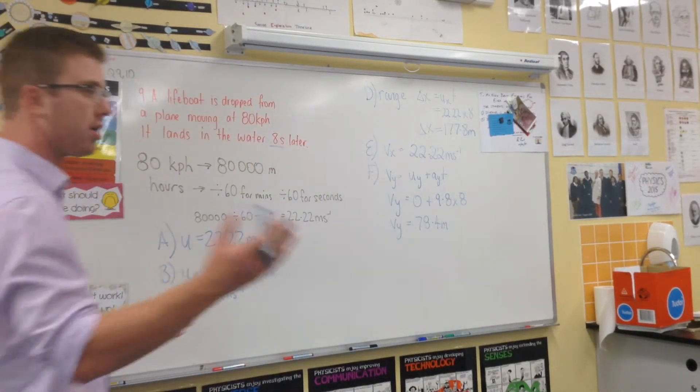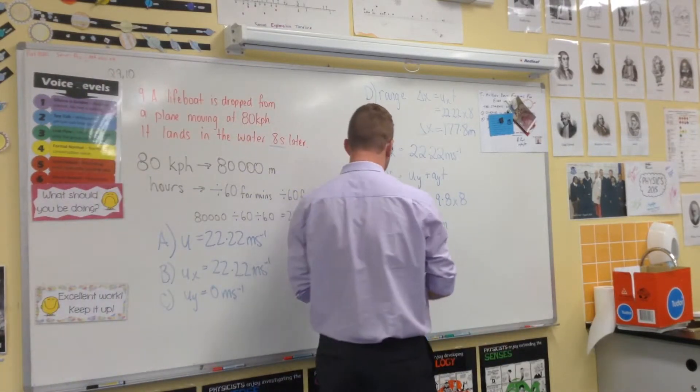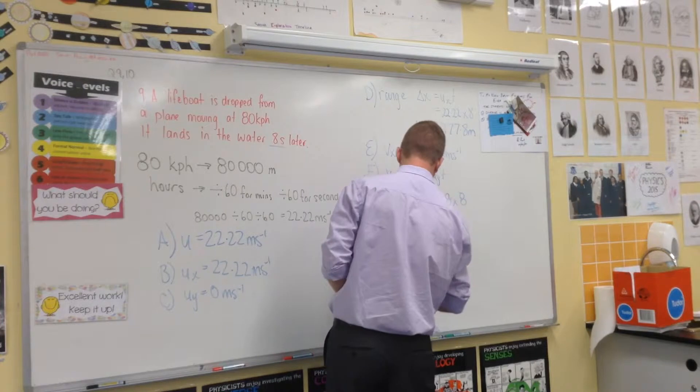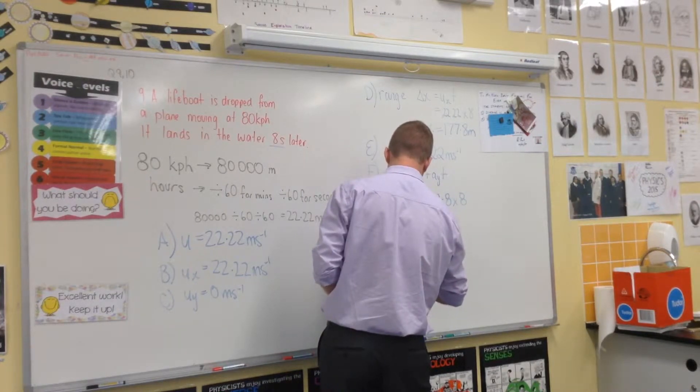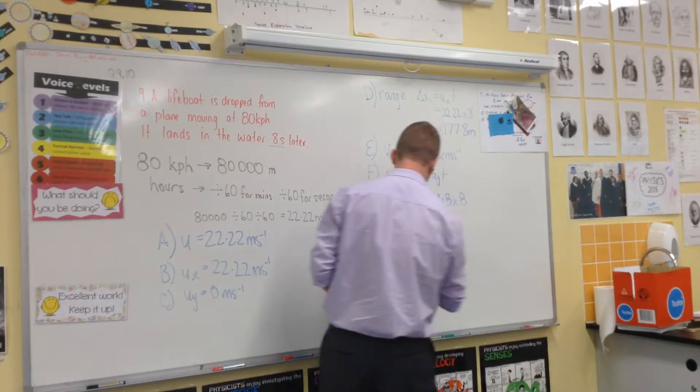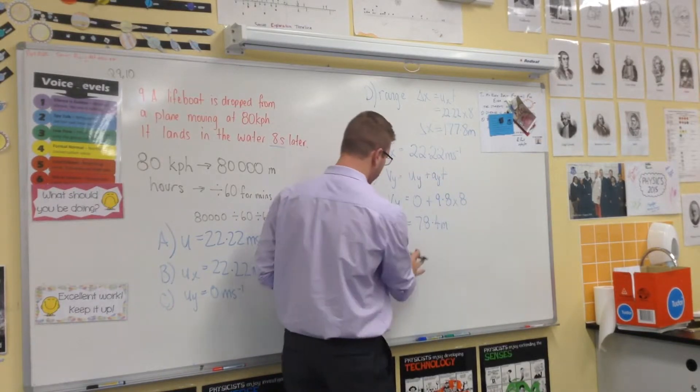Now, we've got a triangle scenario. So E, F, G. We have 78.4 over here, and we've got 22.22 over here. We want to find V, yeah?